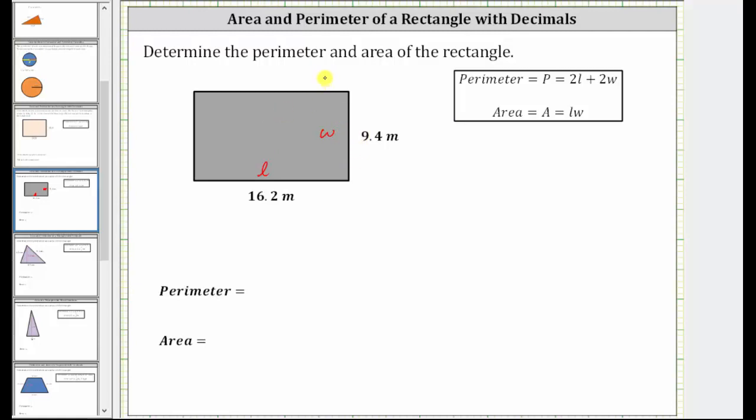Beginning with the perimeter, remember the perimeter of a polygon is the distance around the polygon, which means we can always find the perimeter by adding the lengths of all the sides. Or because we have a rectangle, we can also determine the perimeter by using the formula P equals 2L plus 2W, where 2L is two times the length and 2W is two times the width.